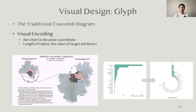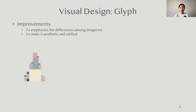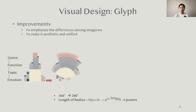We got inspiration from the traditional Coxcombe diagram — a bar chart in polar coordinates — and conducted several improvements on the traditional design. For each imaginary, we first distilled all the poems that mention it, then summarized the proportion of poems in each emotion. For poems in each emotion category, we compute the proportion of topics, and form four levels of hierarchy distributed along the polar system. We use radius length, opacity, and arc length to triple-encode the number of poems to magnify differences, using only two-thirds of the circle to save space.